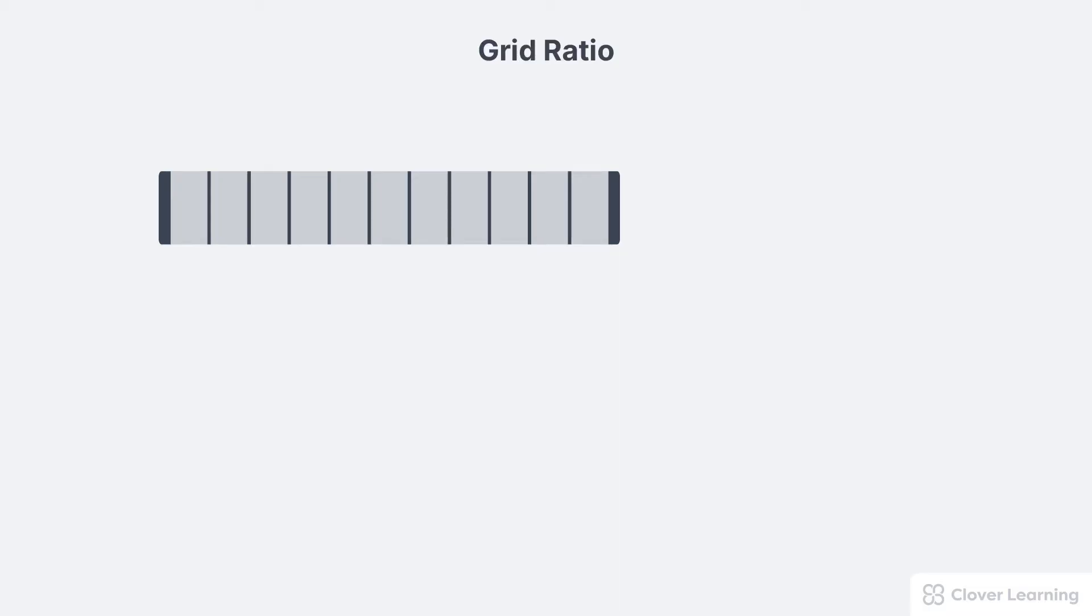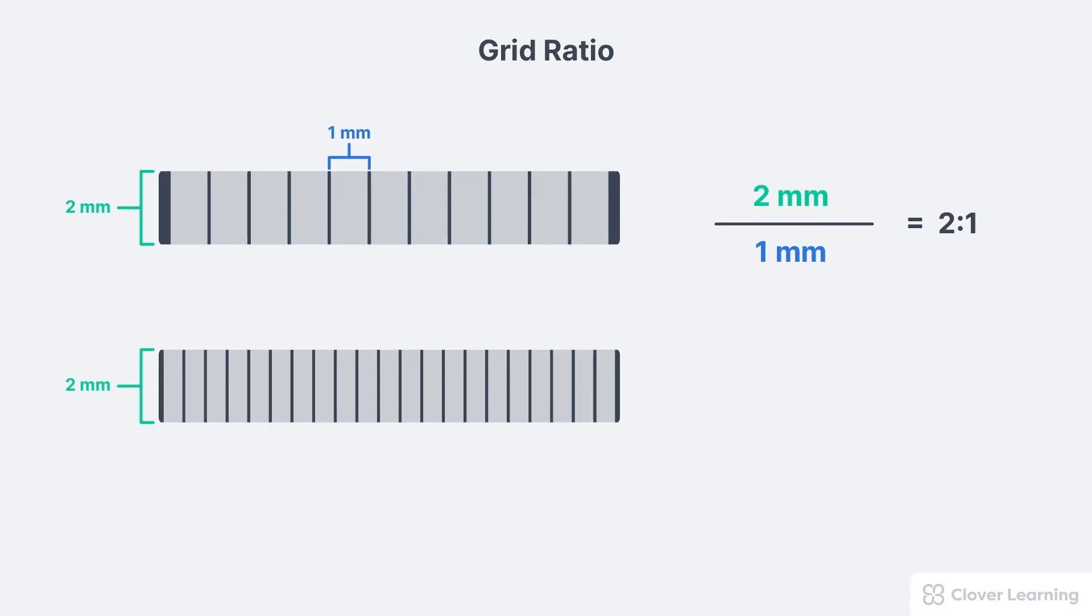The efficiency of a grid in removing scatter is designated by its grid ratio. The grid ratio is defined as the height of the lead strip compared to the distance between them. For example, a grid having lead strips two millimeters high and having one millimeter of distance between each strip has a grid ratio of 2 divided by 1, which is 2 to 1. If the distance between the strips decreases to 0.5 millimeters, then the new grid ratio is 2 divided by 0.5, which is the same as 4 to 1.